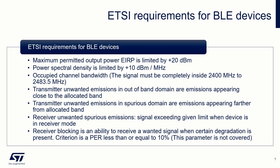Receiver blocking is a measure of the ability of the equipment to receive a wanted signal on its operating channel without exceeding a given degradation in the presence of an unwanted signal. The minimum performance criterion is PER less than or equal to 10%. This parameter is not covered by this video.